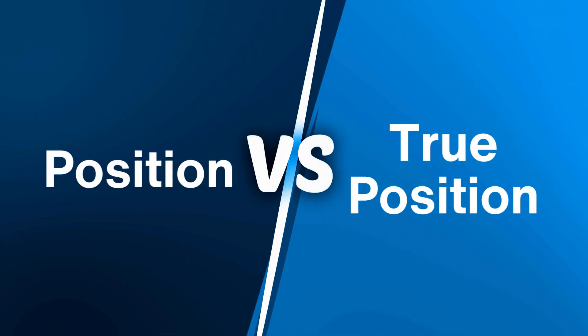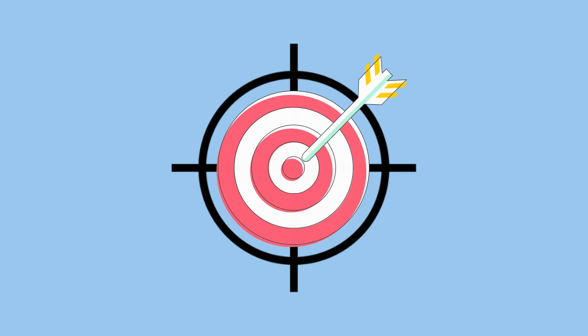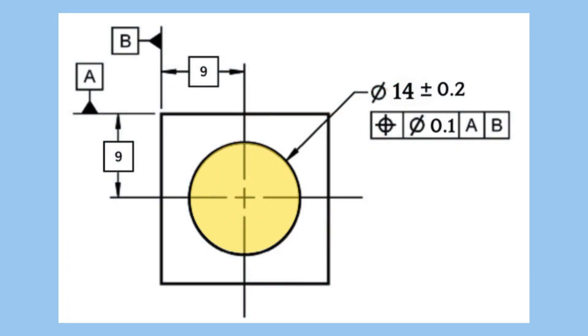There is often a confusion between the terms position and true position. Let's start by clarifying this point. Position is a tolerance callout that defines the allowable variation in the location of a feature from its ideal position. In this example, the center of the 14mm bore must be within 0.1mm from its theoretical position.